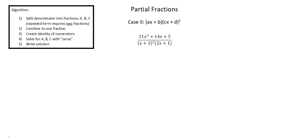Hi, this is Thomas. Welcome back. We're continuing to look at partial fractions, now case 2, which involves a repeated linear factor. We see in our example 11x squared plus 14x plus 5 over quantity x plus 1 squared times quantity 2x plus 1 that we have a repeated linear factor, x plus 1 times x plus 1. That's going to change our algorithm, change our process slightly, so let's begin.